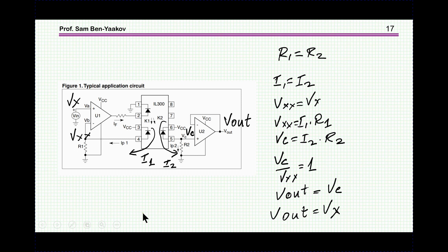And if Vc is equal to Vxx, then Vout, which is equal to Vc, it's just a follower, is equal to the input voltage. So it's a different circuit, different element, but there are some common ideas here between what I've shown before and what is done here.